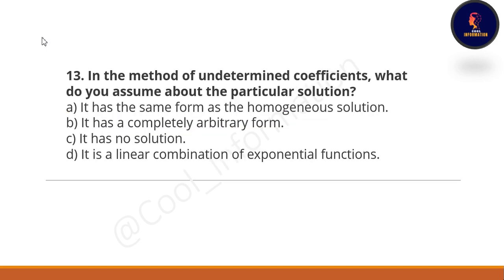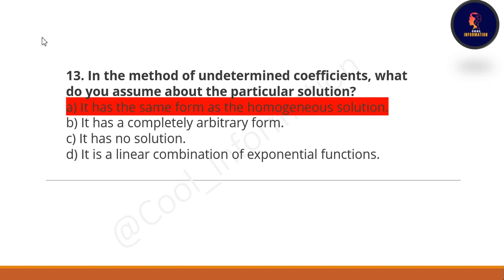Next question: in the method of undetermined coefficients, what do you assume about the particular solution? The correct option is option A — it has the same form as the non-homogeneous term. It's a very simple question.